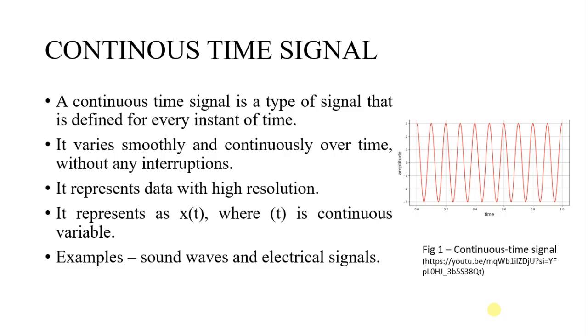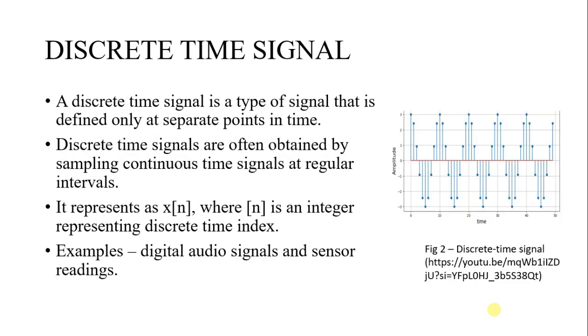Next are discrete time signals. A discrete time signal is a type of signal that is defined only at separate points in time. Discrete time signals are often obtained by sampling continuous time signals at regular intervals. It is represented as x[n] where n is an integer representing discrete time index. Examples are digital audio signals.